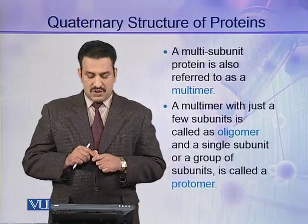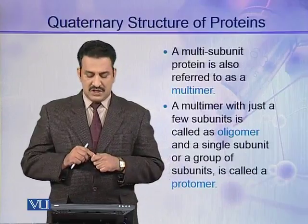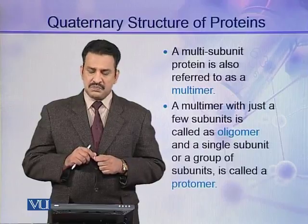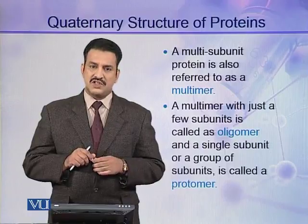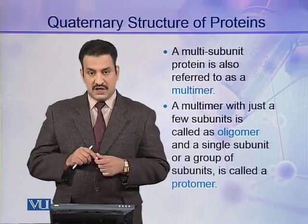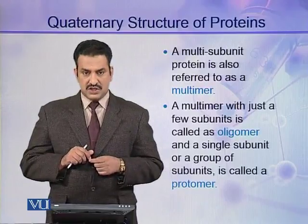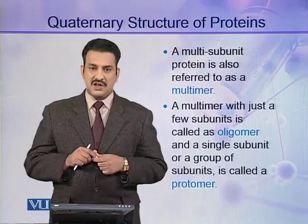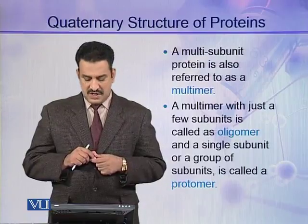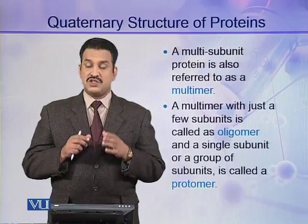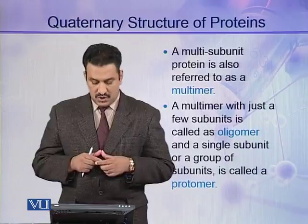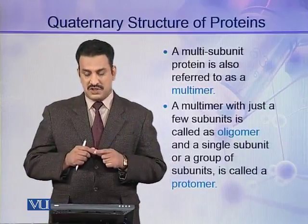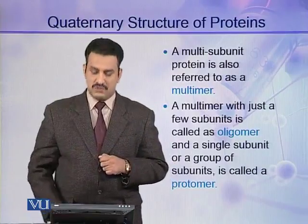A multi-subunit protein is also referred to as a multimer because it contains many subunits. If a multimer contains few subunits, it is called an oligomer, and a single subunit or a group of similar subunits is called a protomer.